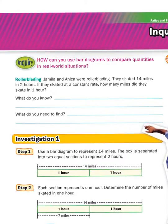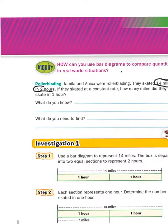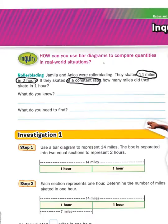So, here's what I know. Jamila and Anika were rollerblading. They skated 14 miles in two hours — I'm going to circle that. If they skated at a constant rate, that means they went the same speed all the time. How many miles did they skate in one hour? Where we have to find out something, that's what I'm going to squiggly underline — how many miles did they skate in one hour. So, 14 miles in two hours at a constant rate, and we have to figure out how that was in one hour.